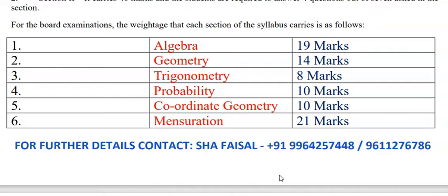For the board examination, the weightage of marks is as follows: Algebra carries 19 marks, Geometry 14 marks, Trigonometry 8 marks, Probability 10 marks, Coordinate Geometry 10 marks, and Mensuration 21 marks. Comparing all topics, Mensuration carries the highest marks, followed by Algebra, and then Geometry.